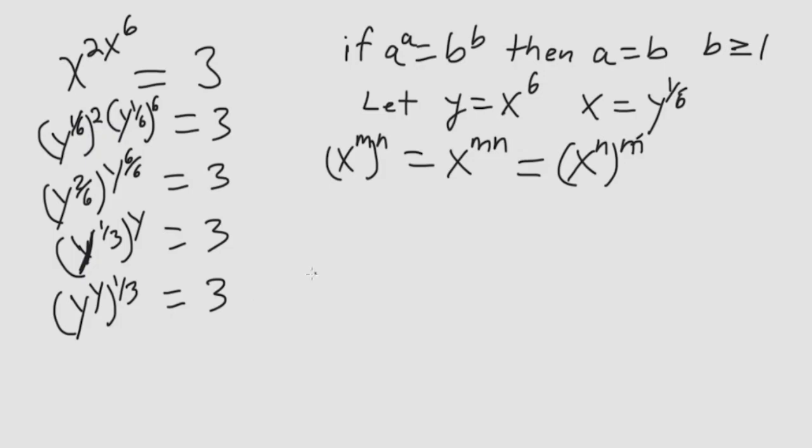Now I'll use an old trick that you've all seen before. I'm having here, I want to get a to the a, so I'll raise it to a power to eliminate the 1 third. So I'll raise it to 3. So I have y to the y to the 1 third, and I'll raise the whole thing to 3. I do it on one side, I do it on the other side.